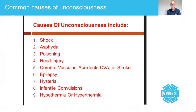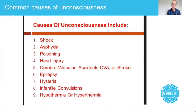Poisoning can either be accidental or intentional. For example, accidental poisoning could be when you're walking into a situation whereby there's gases in a room, maybe in an industrial environment, or it can be intentional through drug overdoses.